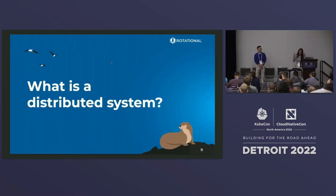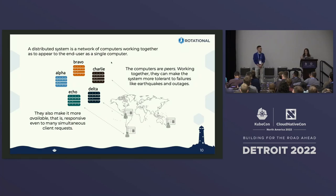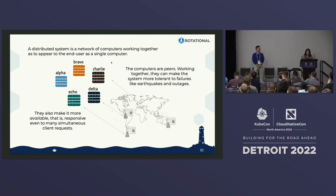What is a distributed system? Hopefully you already have this picture in mind: a group of servers arrayed together, interacting and communicating with each other. From the outside — from a client perspective — you're just interacting with one thing. It's the veil of a singular machine, but it's actually many machines working together.